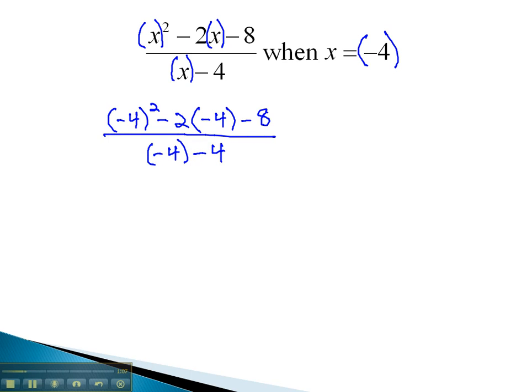We can then simplify this expression using the order of operations, which says to do exponents first. This will give us 16, minus 2, times negative 4, minus 8 in the numerator, and negative 4, minus 4 in the denominator.